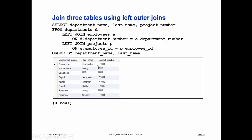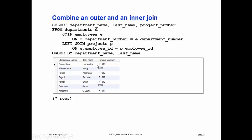They do the same thing with three tables using both a left and a right. You can combine an outer and an inner join. You'd want to do that when you want to get all the information even if, like in this case, there's no project number. It looks as though in these departments these are the people working there and these are the projects they're working on — Hardy is not working on a project and Jones is not working on a project.